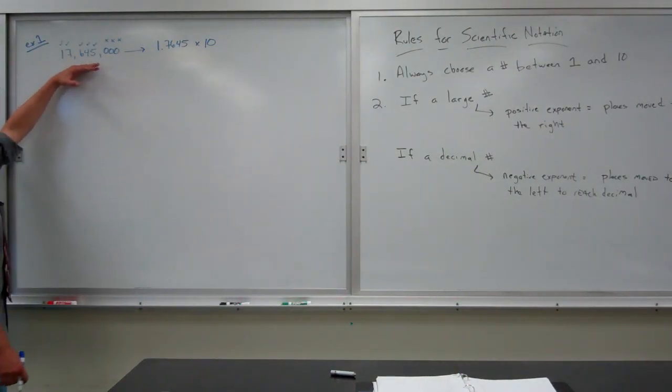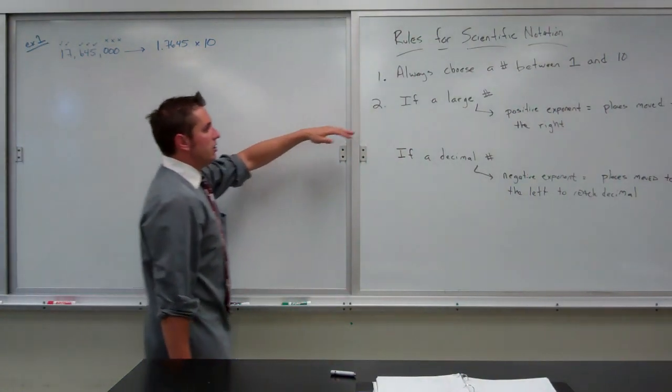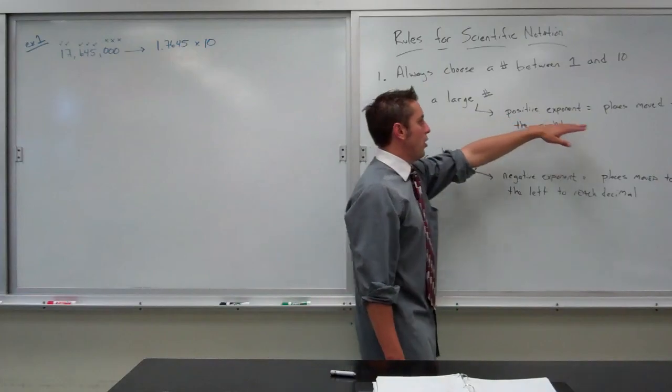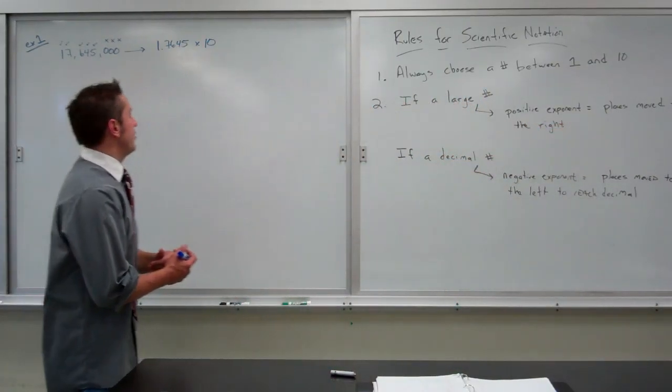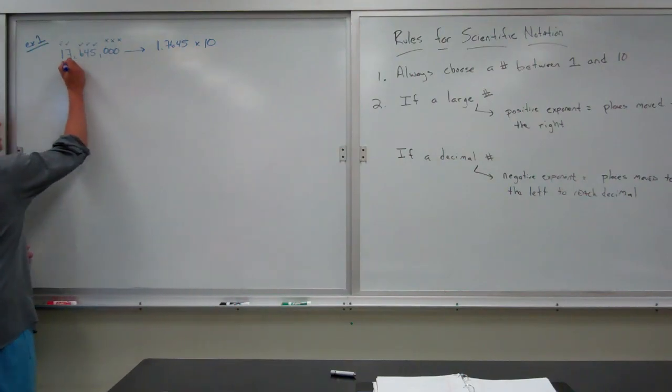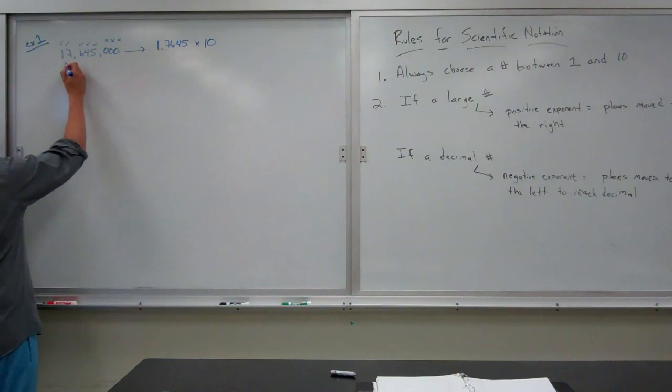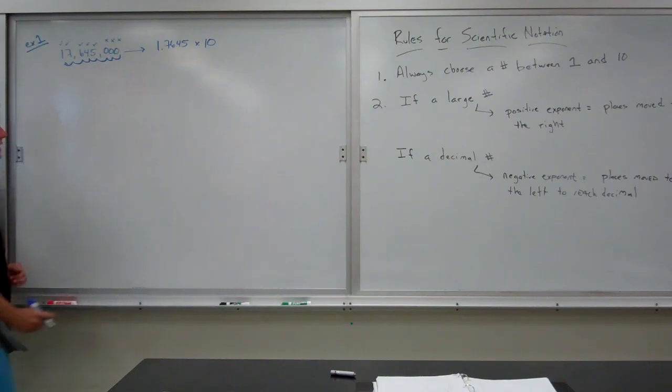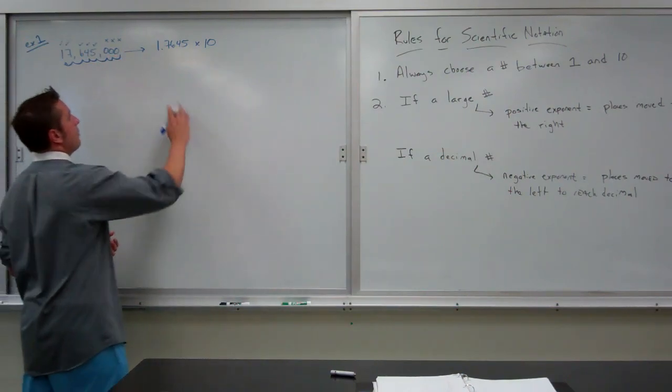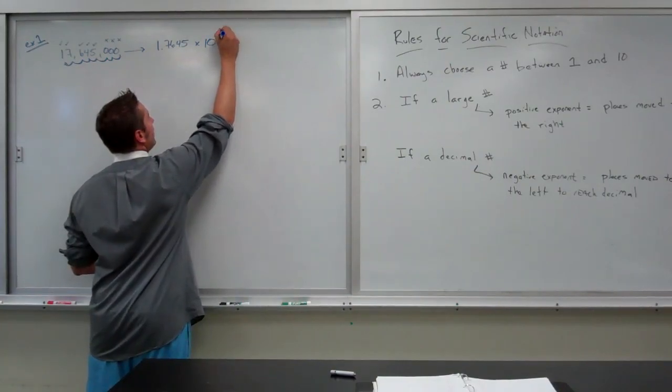Well, sure enough, 17645000 is a very large number. So, I'm going to have a positive exponent equal to the places moved to the right to reach the end of the number. So, here is where I put my decimal. So, I count how many places to the right I had to go and it was 1, 2, 3, 4, 5, 6, 7. So, I would write this number as 1.7645 times 10 to the 7th.